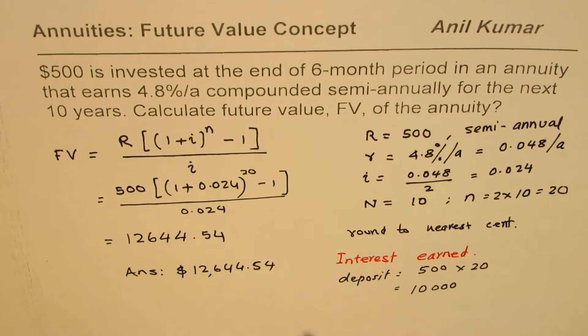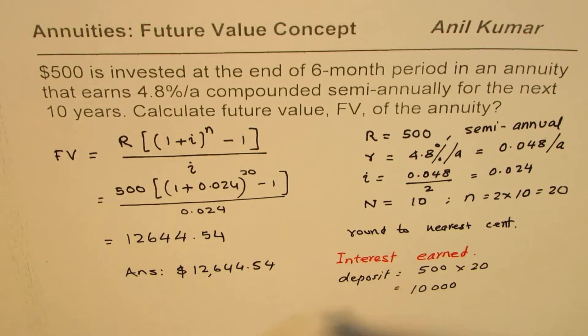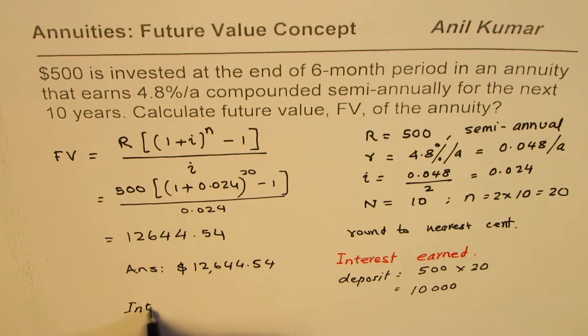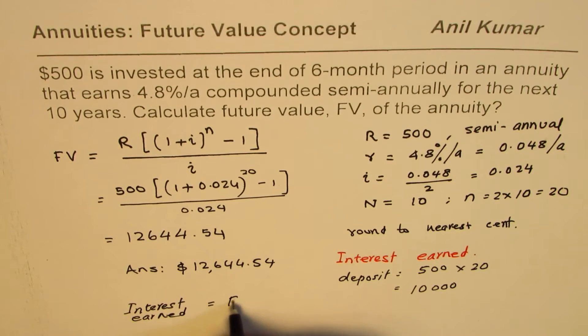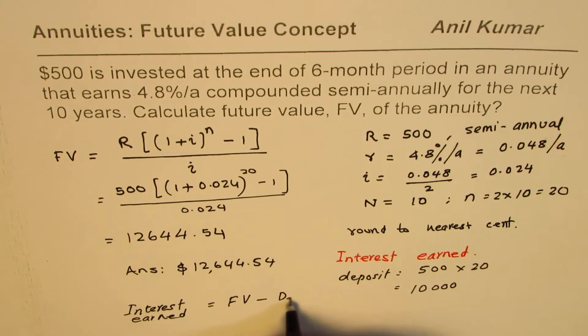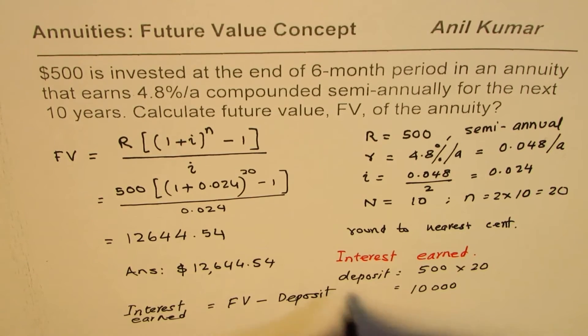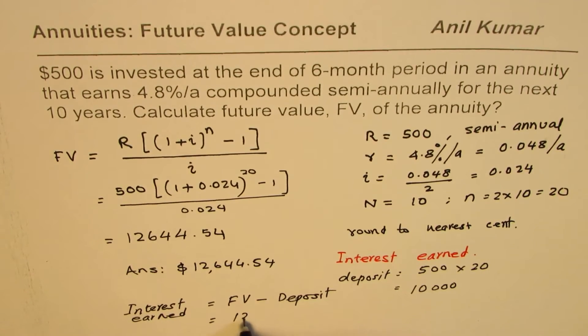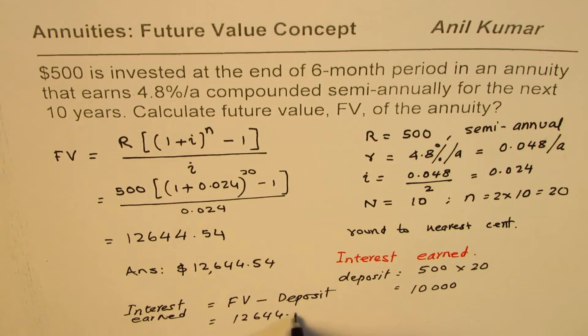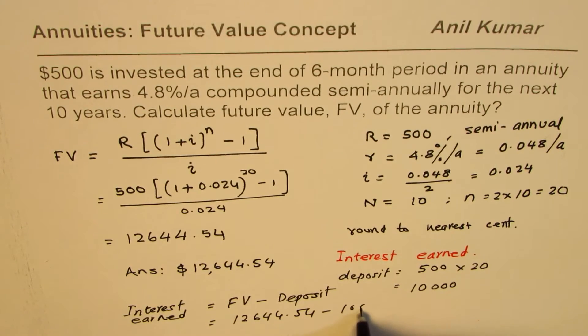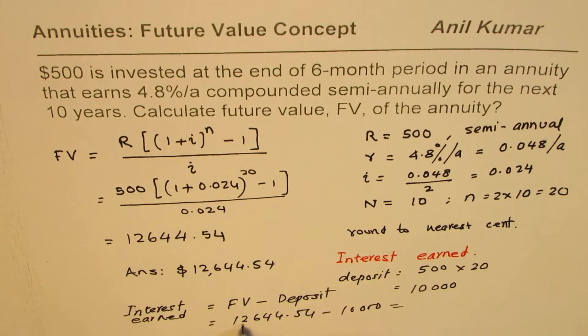So interest is the difference. Interest earned is future value minus deposit. So in your case, future value is 12,644.54 take away 10,000, so 10 to 6, so that's 2644.54.